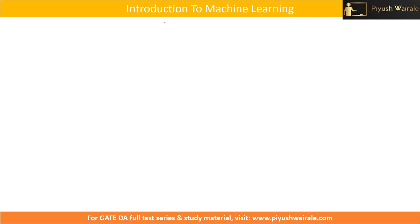As you all know, we have two types of learning in our syllabus: supervised learning and unsupervised learning. We have reinforcement learning also, but we are only going to see the theoretical part of it because it is not specifically mentioned in the syllabus. We will see an overview of it at the later part of the course, but we are going to focus more on supervised learning and unsupervised learning.